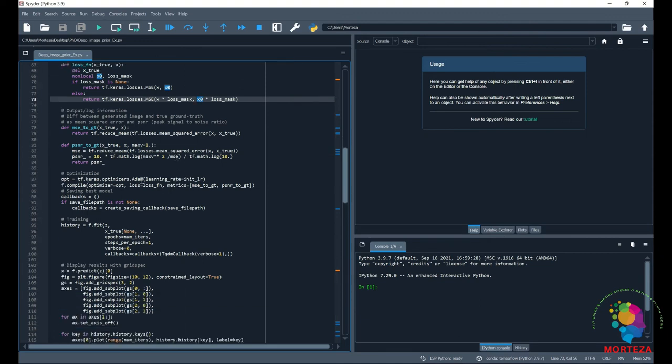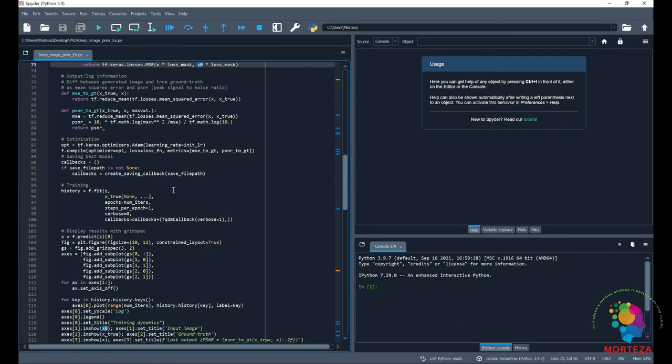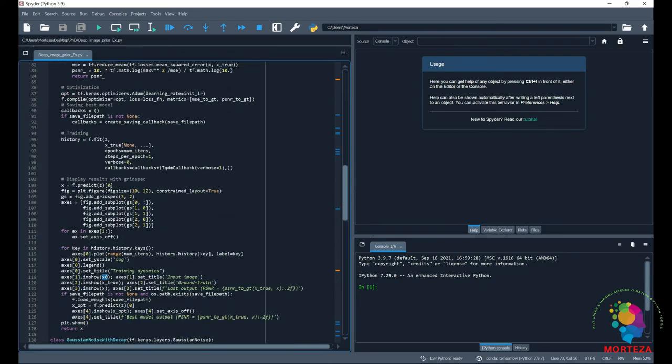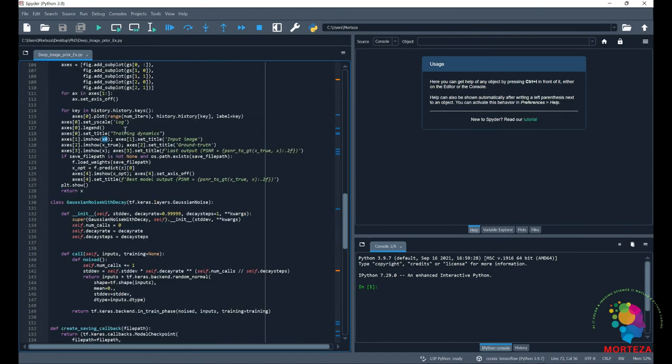We're going to ignore everything else because it's not related to this video. And we are using also Adam Optimizer, and we compile the network here. And in each iteration, we predict the X, and we calculate the loss function as shown.